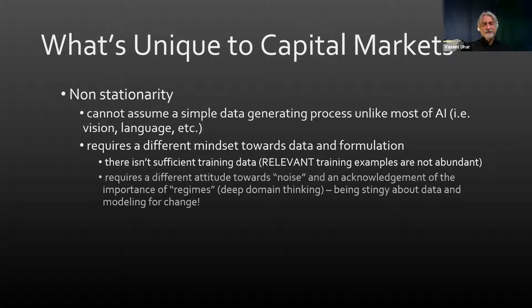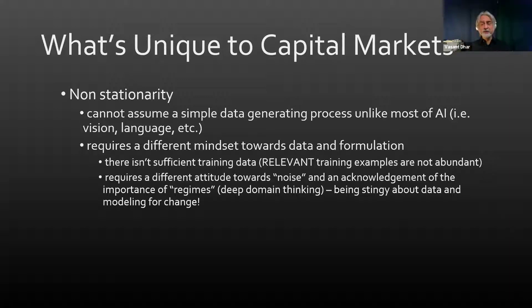In finance the problem is the lack of sufficient training data. It also requires a different attitude towards noise and an acknowledgement of regimes and deep domain thinking. Regimes enable us to make better use of the limited training data we have. It's a mindset that says you've got to be stingy about data and you have to model for change — unique relative to other problems that assume stationarity, where you converge on a problem over time and get better and better.